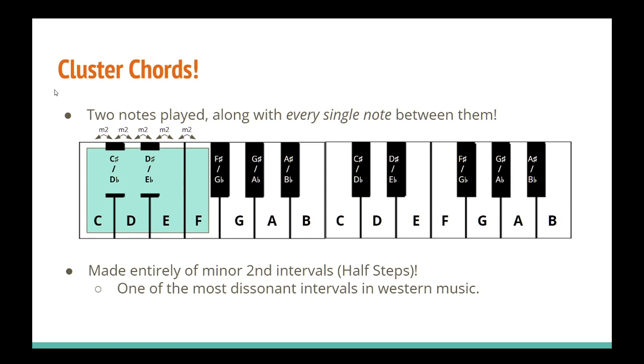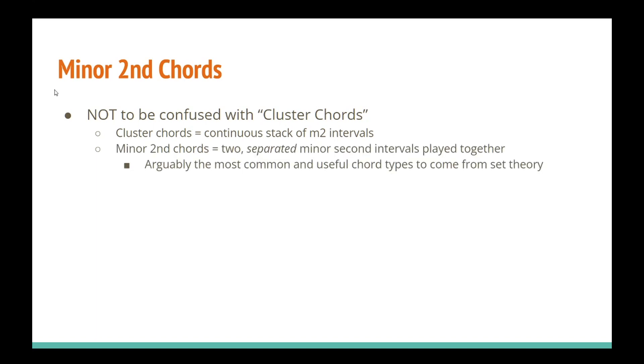Our second approach is called a minor second chord. Not to be confused with cluster chords. I know it's confusing, but stay with me. Cluster chords are a stack of continuous uninterrupted minor second intervals. But a minor second chord consists of just two separate minor second intervals, and they're arguably the most common and useful chord types to come from set theory.